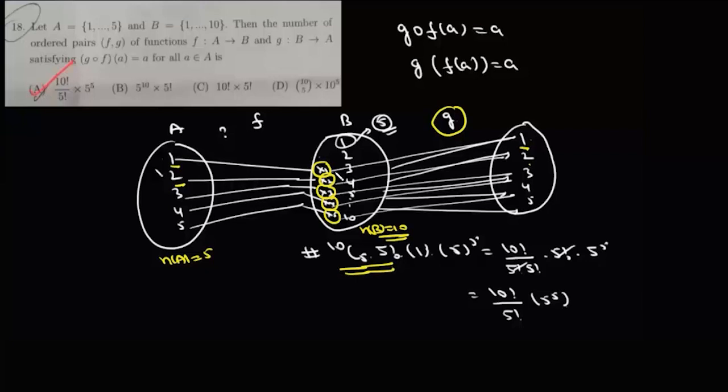Now coming to this set B, the set B has 10 elements. For these five elements, we already know their images, right? If x1 is mapped to 1, then x1 must be mapped to 1 for this g of f to equal the identity. So the image of these five elements are already defined, so the number of ways of choosing images for these five elements will be simply 1.